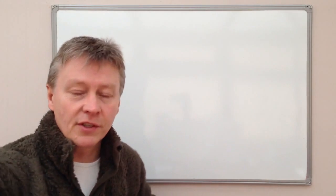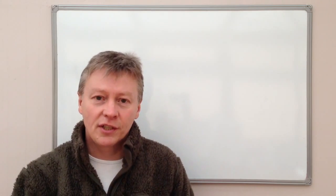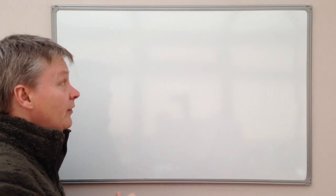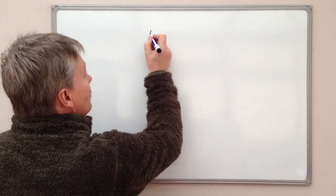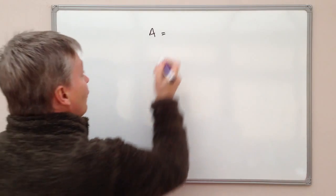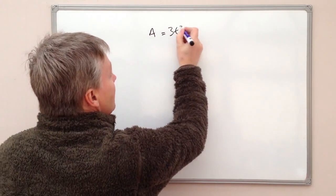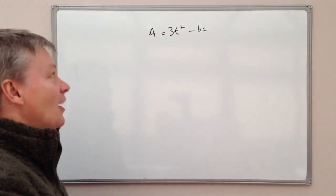The question that's been given to us is around level C, level D at GCSE, and generally speaking it will give you a formula which would look something like this. So we've got A equals, I'm going to have to copy from my notes, but 3T squared minus BC. So it looks a fairly complicated formula.